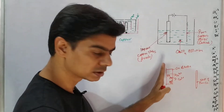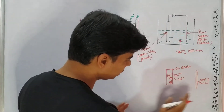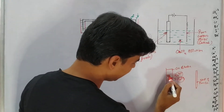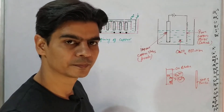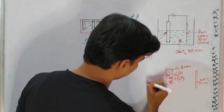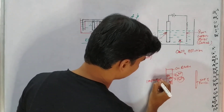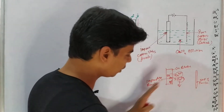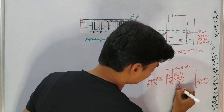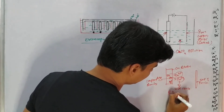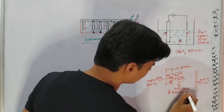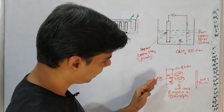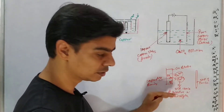The entire copper slab will slowly ionize and enter the electrolyte as copper ions. The metallic impurities will remain near the anode. The pure copper metal will ionize and dissolve in the electrolyte.